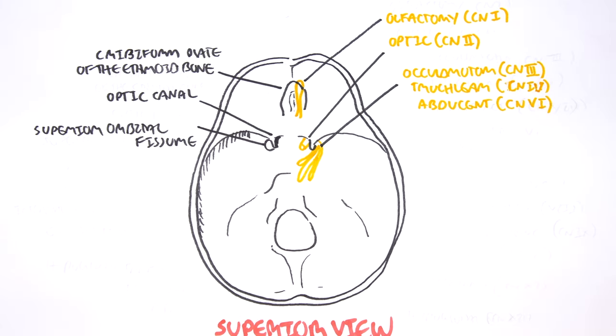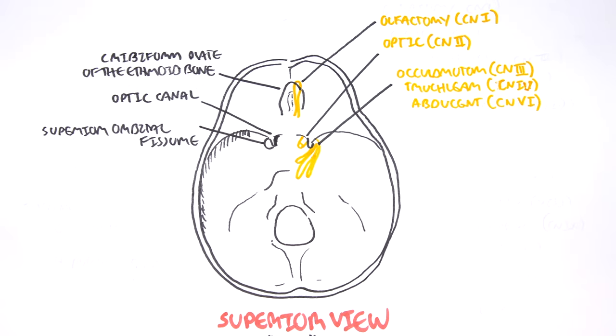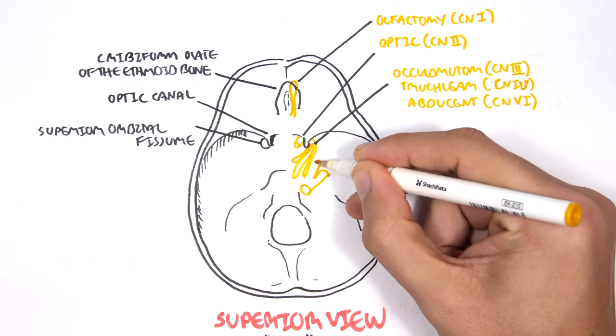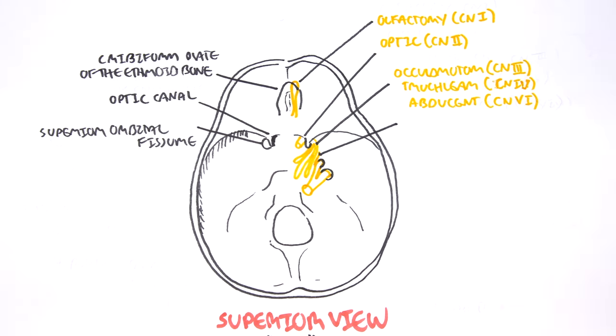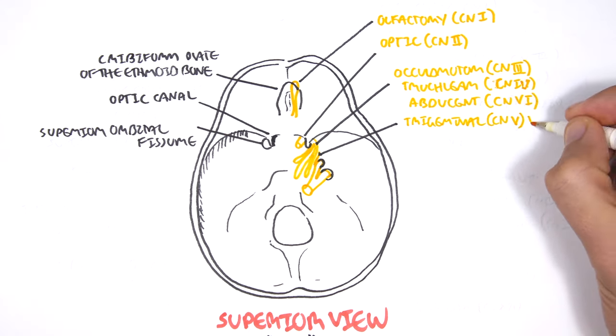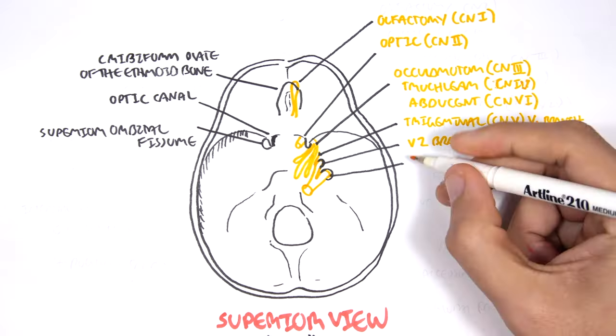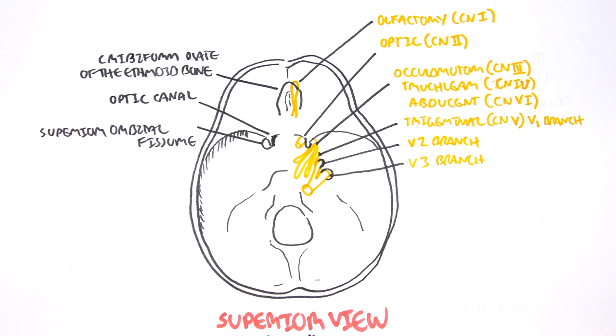We missed cranial nerve number five, which was your trigeminal nerve. There are three big branches of your trigeminal. Your V1, V2 and V3 branches of your trigeminal. The V1 branch of your trigeminal actually exits also through the superior orbital fissure. What's important to know is that all these nerves that exit through the superior orbital fissure, which are your oculomotor, trochlear, abducent and your trigeminal V1 branch, also known as the ophthalmic branch.